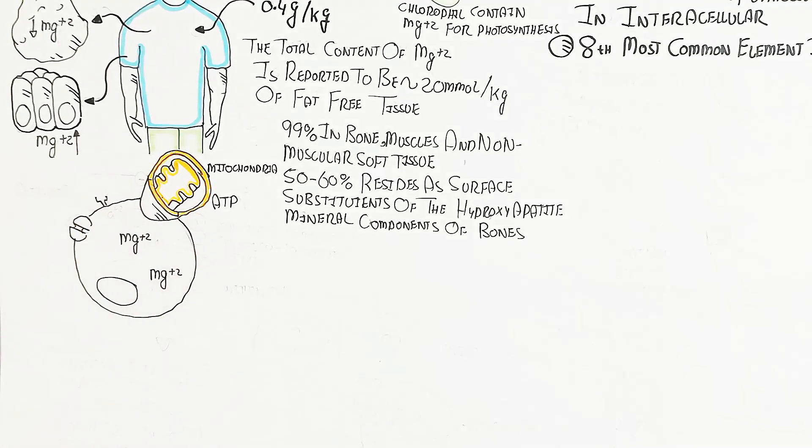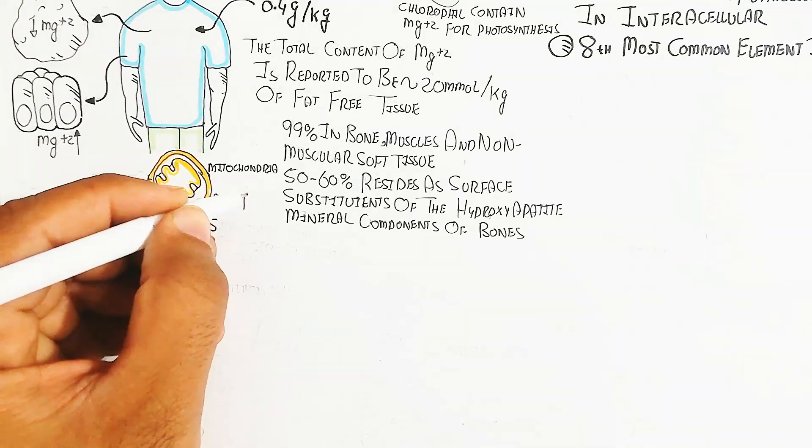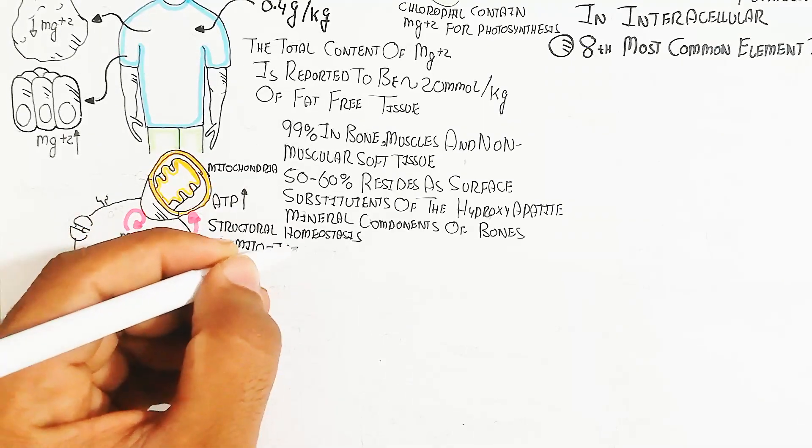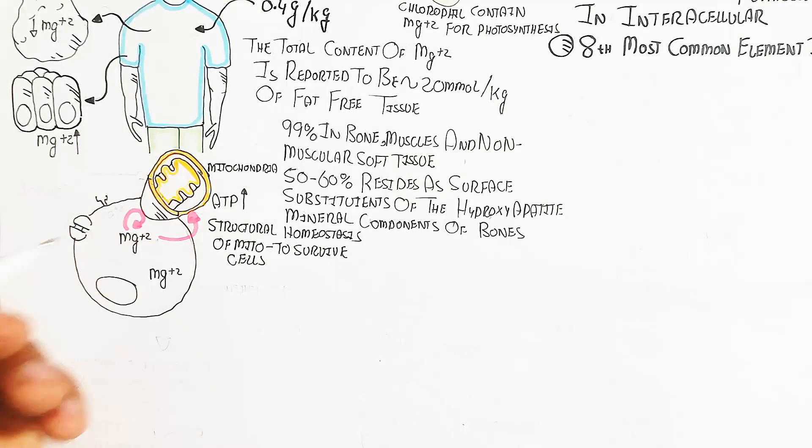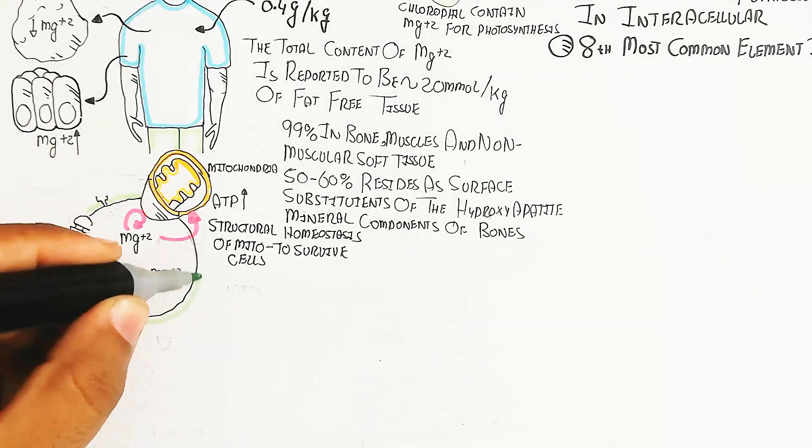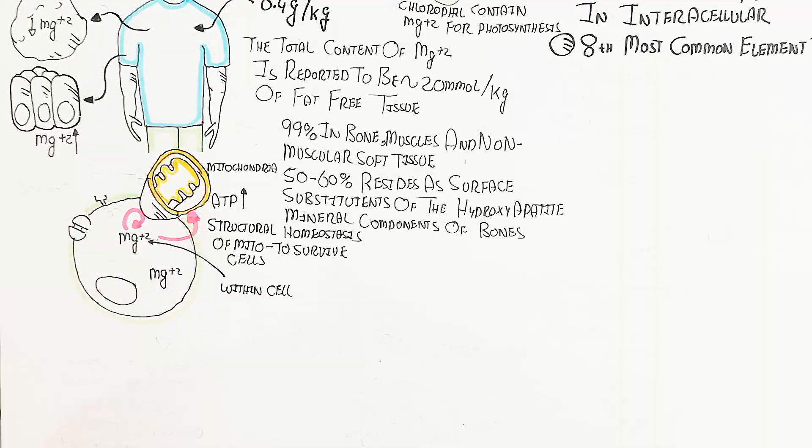The mitochondria contain enzymes where magnesium is the cofactor used for increasing ATP production. The survival of the mitochondria is very important due to magnesium. Calcium works antagonistically and will inhibit, leading to apoptosis, while magnesium will help mitochondria survive, and in this way the cell will survive.